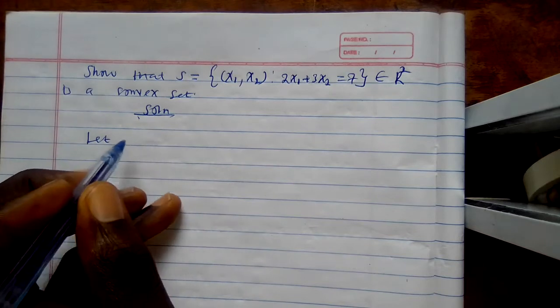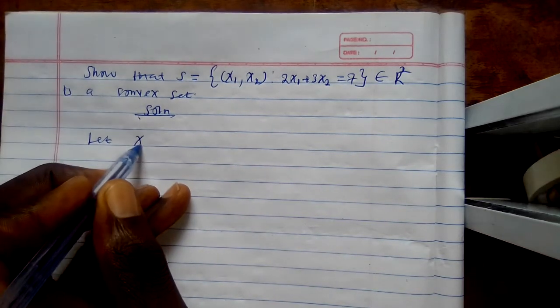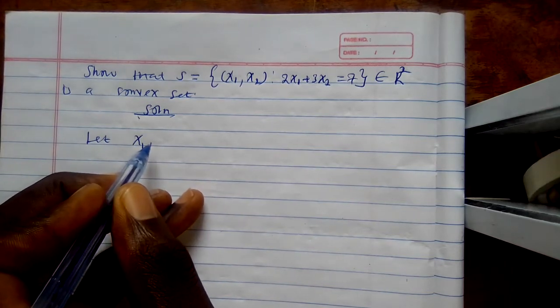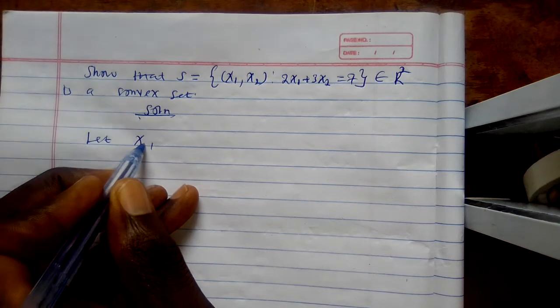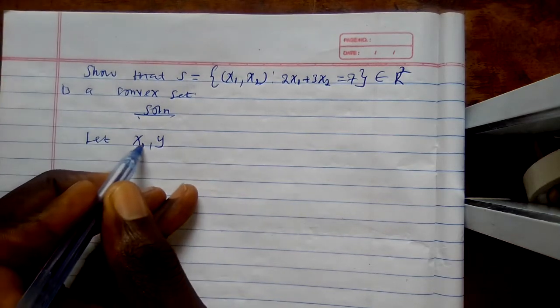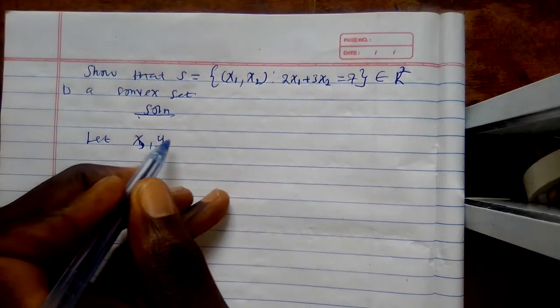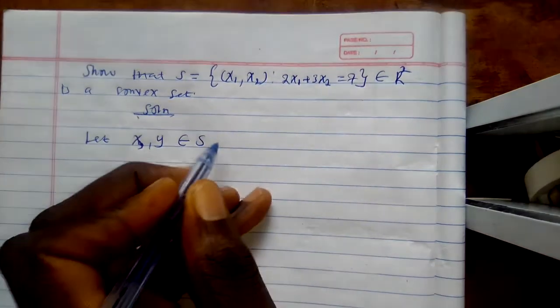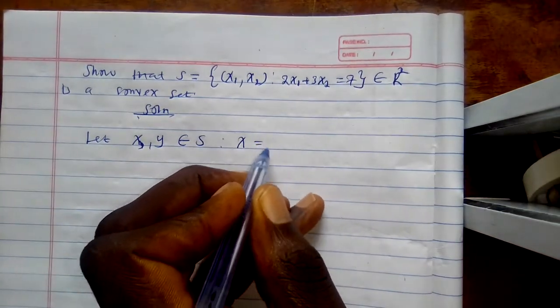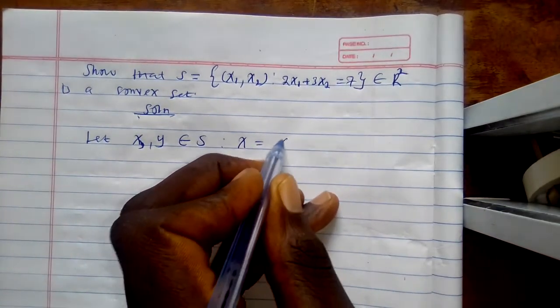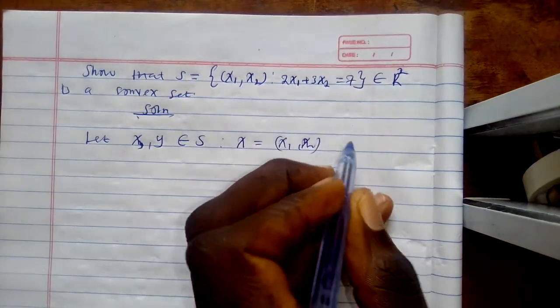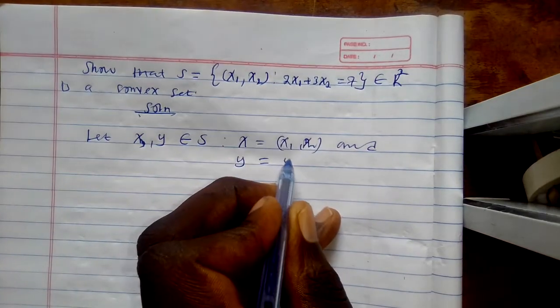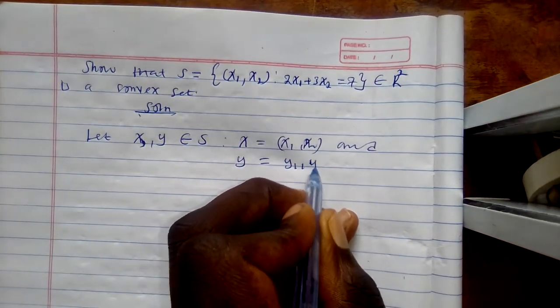Let X, Y be in our set S such that X is equal to (x1, x2) and Y equal to (y1, y2).